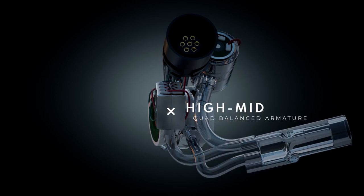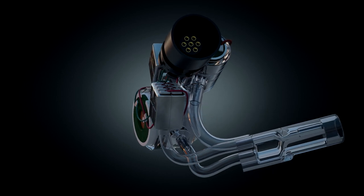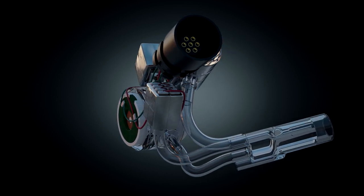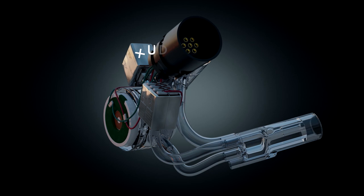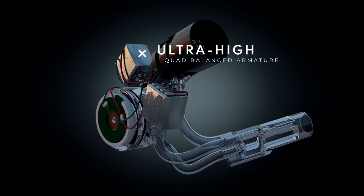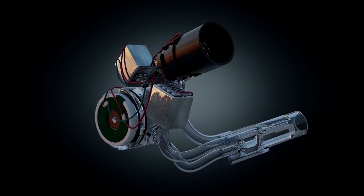The high mid is a quad balanced armature, very flat. We've got a nice little resonant peak up there at 2k5. It's going out to 10k. And then the super tweeter we put in there goes from 10k out past 23k.